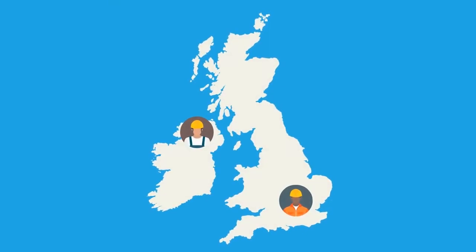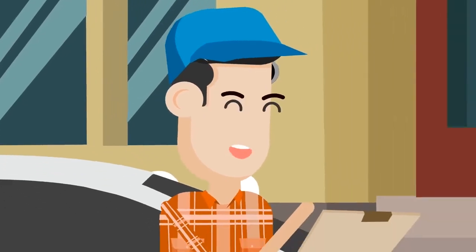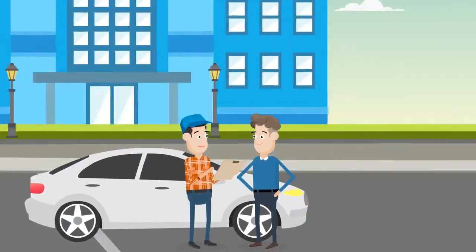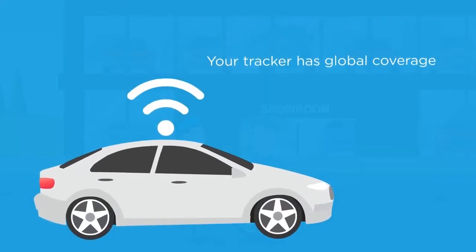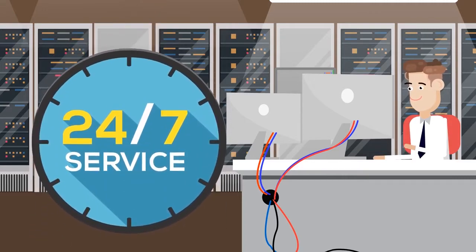Tracker Shop installs Thatcham Trackers in every UK postcode and have the largest network of engineers. We can fit at short notice and visit wherever's most convenient for you, whether that's at home, work, or even the dealership. Your tracker has global coverage and is monitored 24-7 by a fully staffed control room.